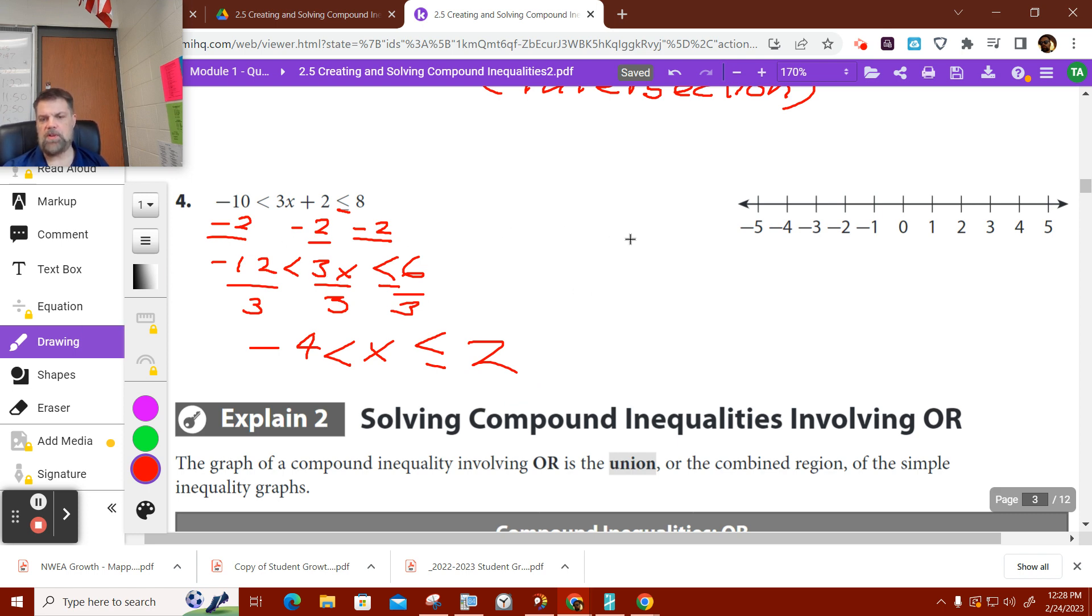At negative 4, open or close circle? Open. We're not going to include... What about 2? That's close because we have an equals sign.